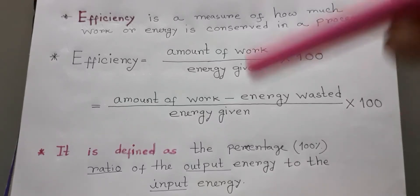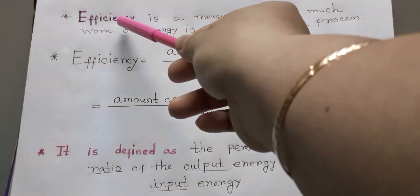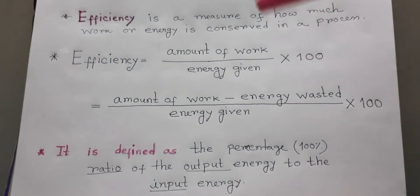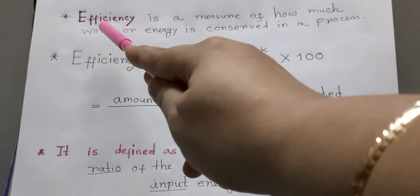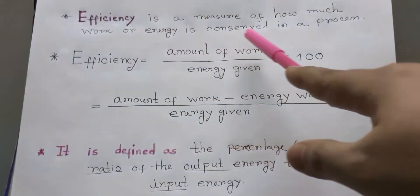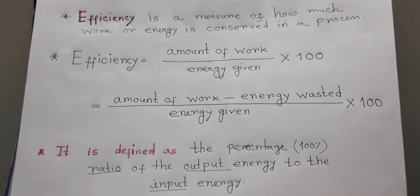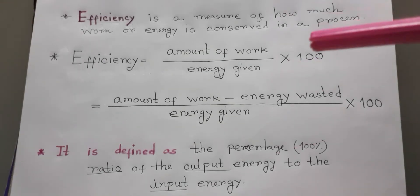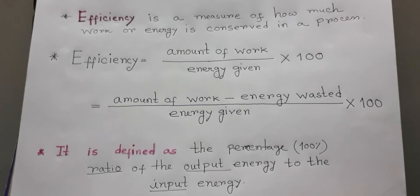Dear student, now I am going to discuss about the topic efficiency. From definition we come to know efficiency is a measure of how much work or energy is conserved in a process. A certain amount of energy is wasted every time while transforming energy from one form to another form — a certain amount of energy is always wasted during transformation of energy.